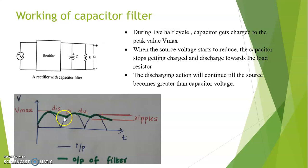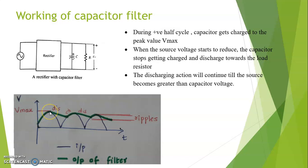The capacitor filter will charge towards the maximum value of the input, as shown in the figure. As the input rises, the capacitor will also charge towards that value. Now when the input falls, the capacitor will start to discharge because it can no longer charge.